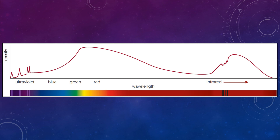Here is a spectrum of Mars as a practical example. There's a lot going on. There are some dips in the spectrum indicating absorption, and some peaks indicating emission at certain wavelengths. You can also see this as extra color in some bands and darkness in others.